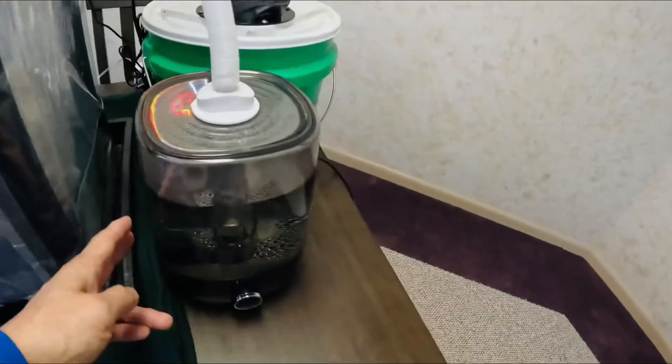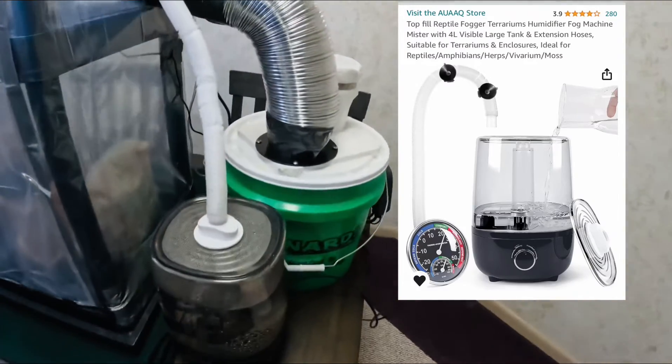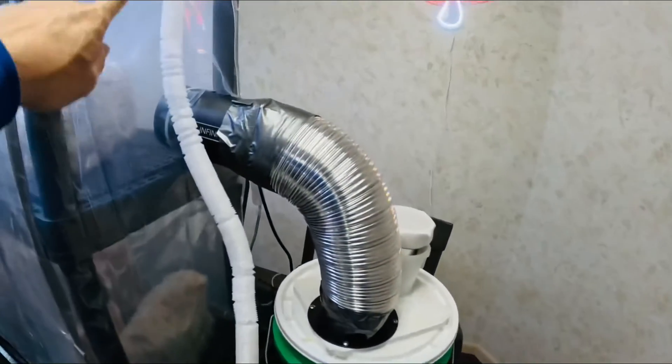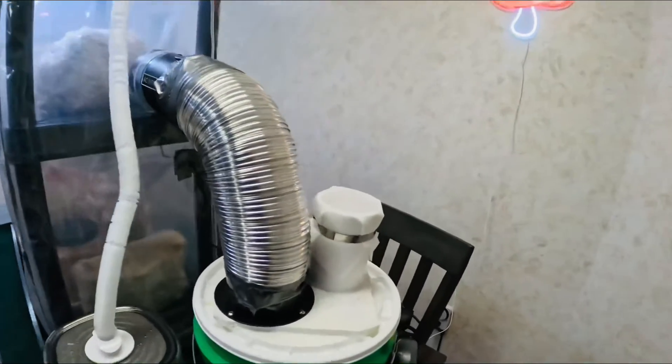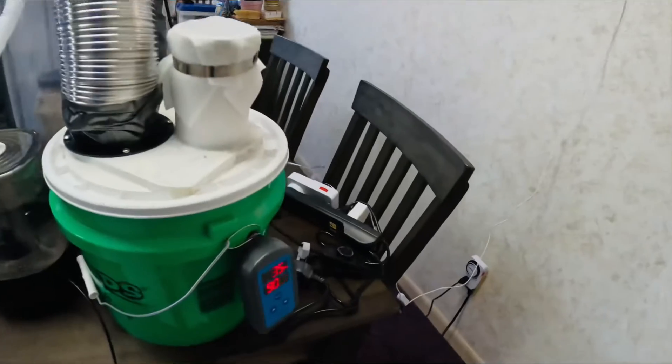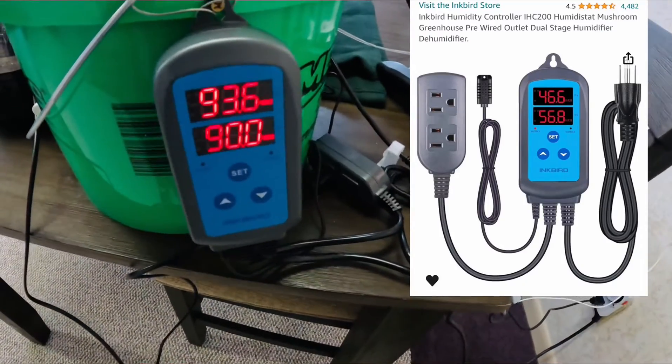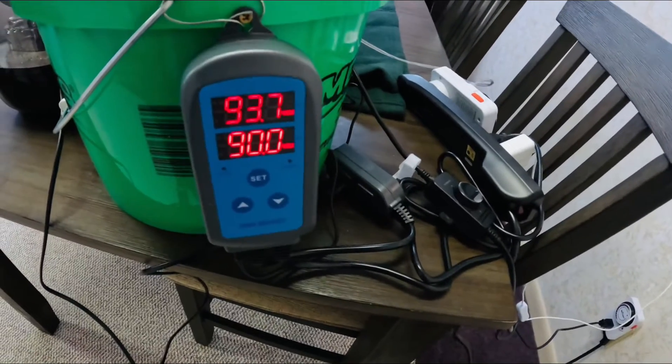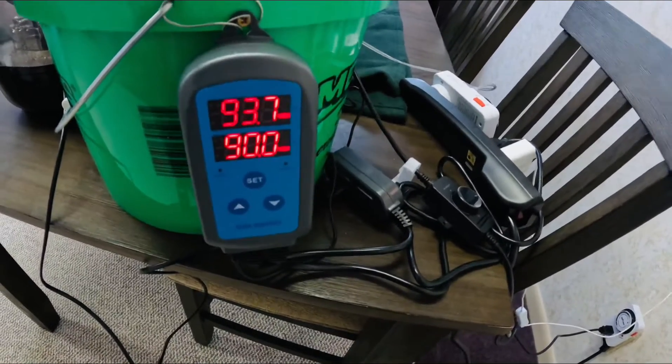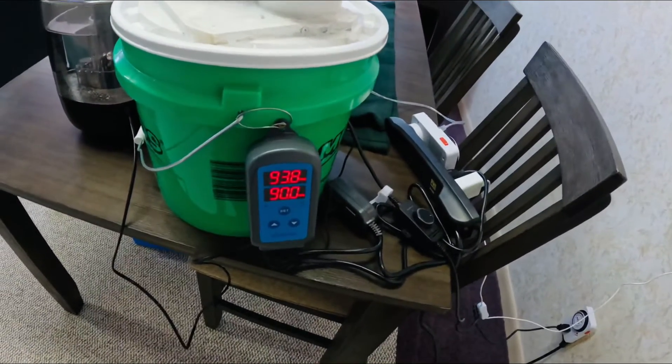Here is the external humidifier with tubing connected to the fruiting chamber. The humidifier is plugged into a humidifier regulator that maintains the humidity between 85 to 90 percent. That seems to be the ideal range to promote mushroom growth.